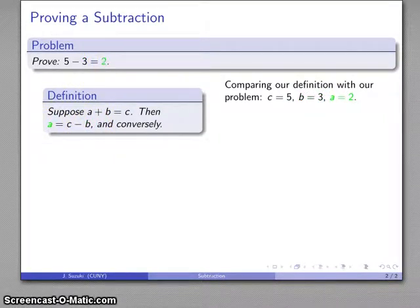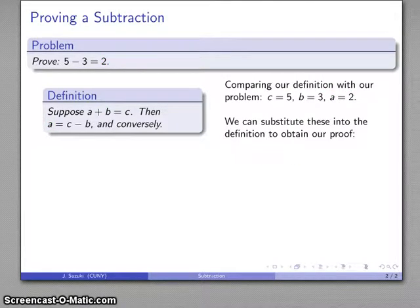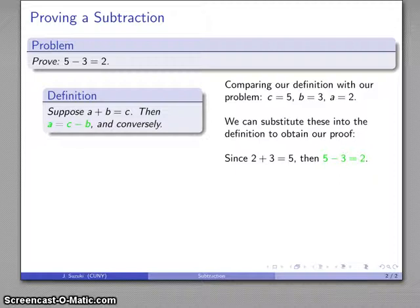So I can fill those in, I'll instantiate the proof here, and I'll go ahead and substitute those in. Since a plus b equals c, 2 plus 3 equals 5, there's the first part of my proof, then 5 minus 3 equals 2.